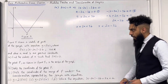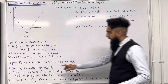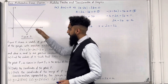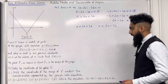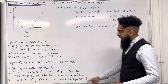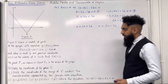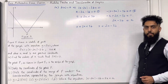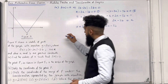Let's move on. The point P, as shown in figure 5, is the vertex of the modulus graph. Part B: state the coordinates of the point P. Please pause the video, have a go at part B; once you've got your complete solution, then play the video.